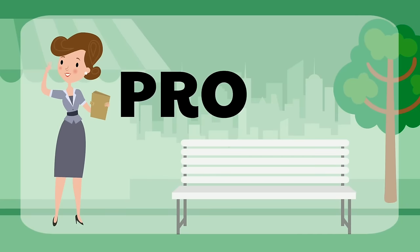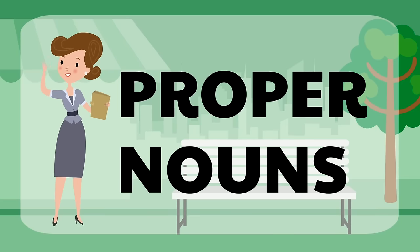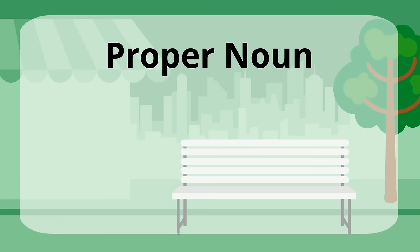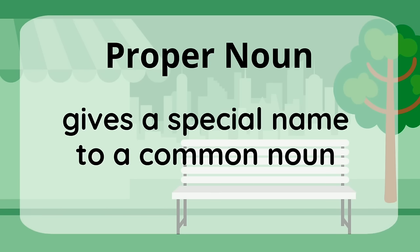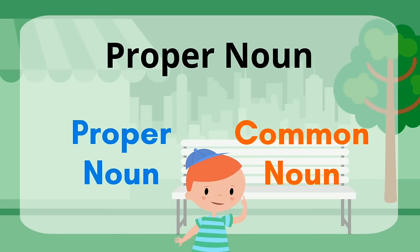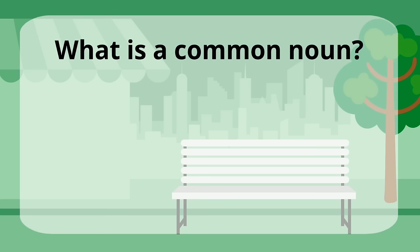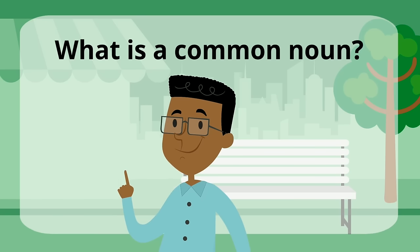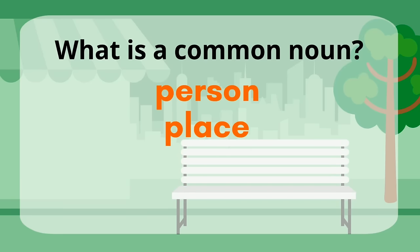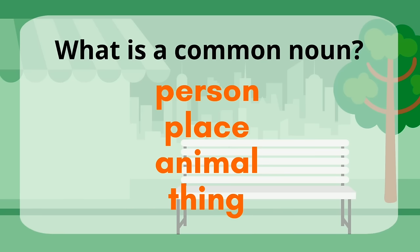In this video we're going to learn all about proper nouns. A proper noun gives a special name to a common noun. They're both nouns, so how are they different? Do you remember what a common noun is? It's a person, place, animal, or thing.